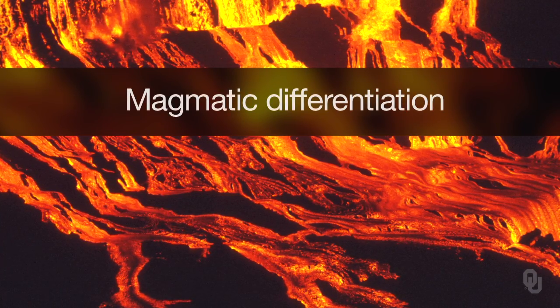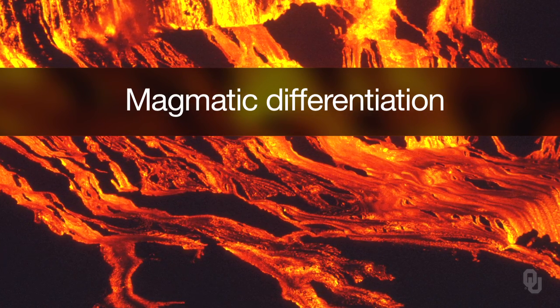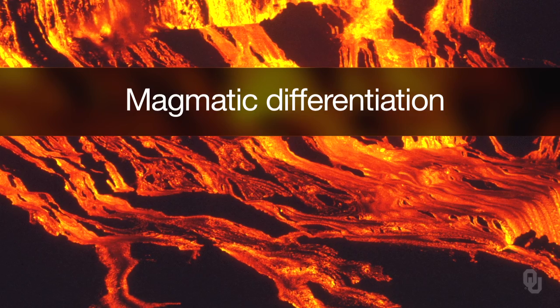In contrast, the crust is mostly composed of granite. There's something called magmatic differentiation, which is very important in forming different types of igneous rocks. For example, assume a magma is composed of 50% mafic minerals and 50% felsic minerals — it would be called a diorite or an andesite.